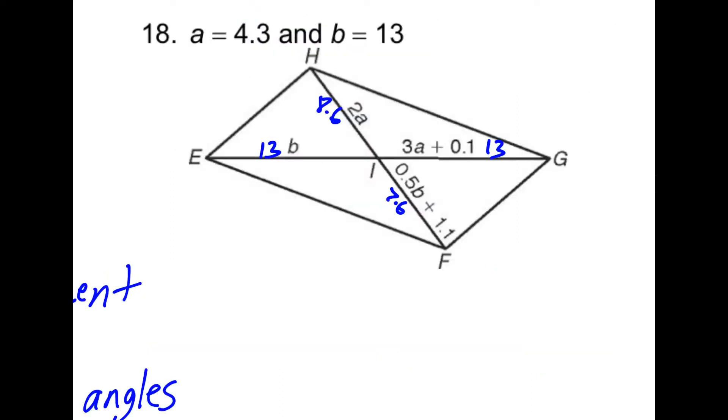So 18 is not a parallelogram. The reason being is that both of the diagonals do not bisect each other. This diagonal is bisected, but this one is not.